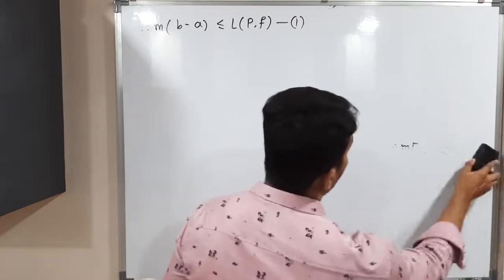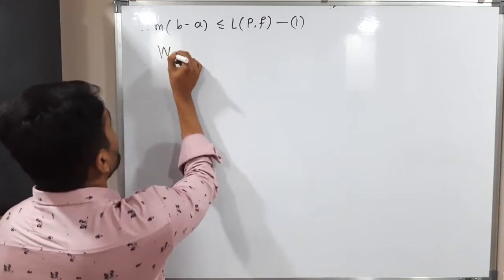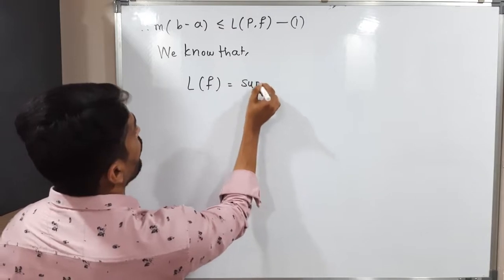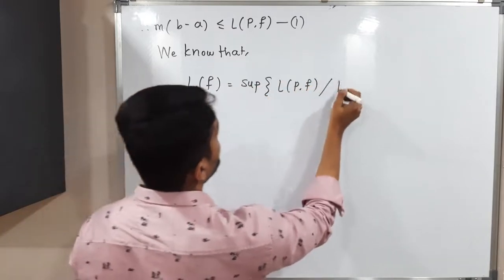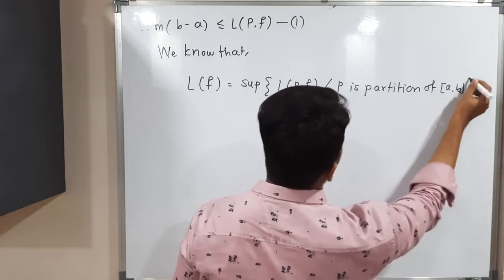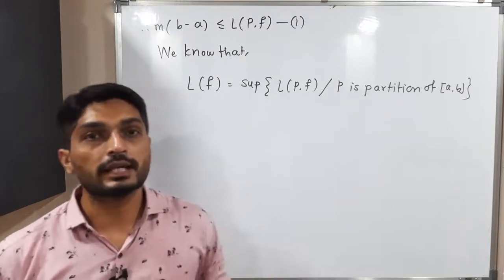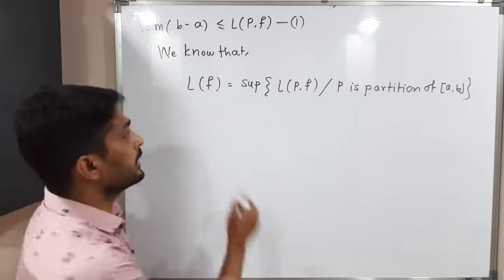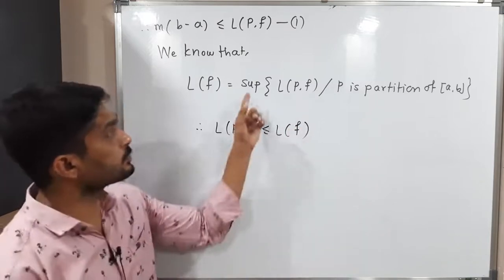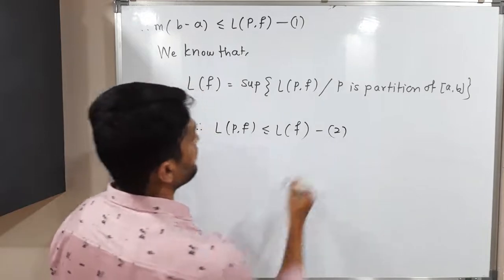Now recall the definition of the lower integral: LF is defined as the supremum of L(P, f) over all partitions P of the closed interval [a, b]. That is, for different partitions we get different lower sums, and their supremum is LF. Therefore, each lower sum satisfies L(P, f) ≤ LF. This is our second inequality.